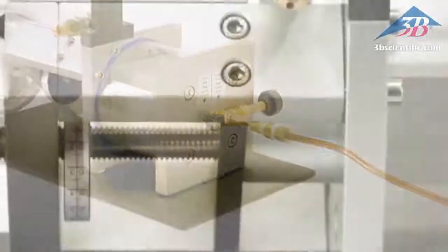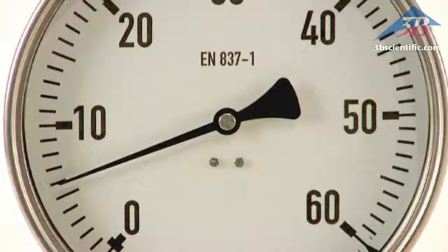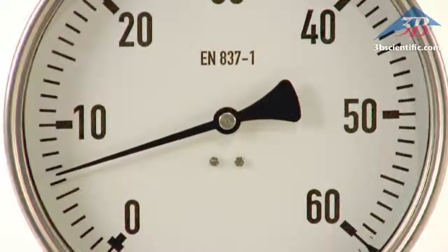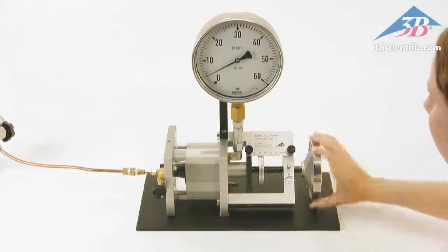The critical point apparatus can be used for both qualitative and quantitative measurements, including the transition from a gas to a liquid, critical opalescence, and recording isotherms in PV and PVP diagrams.